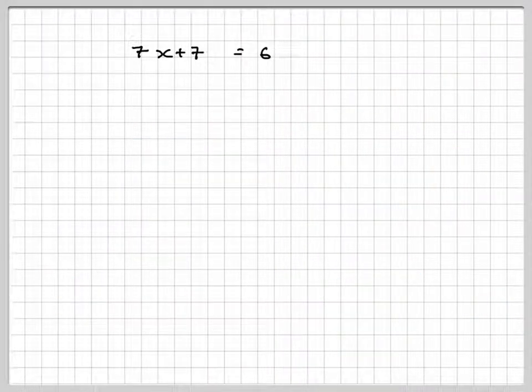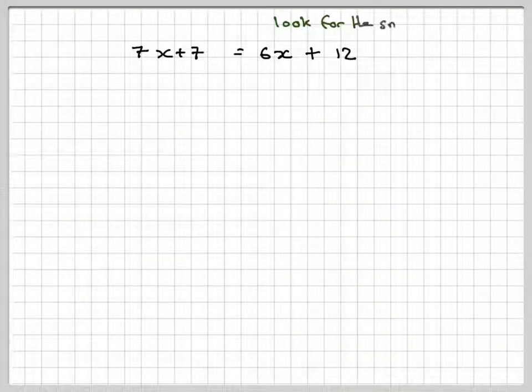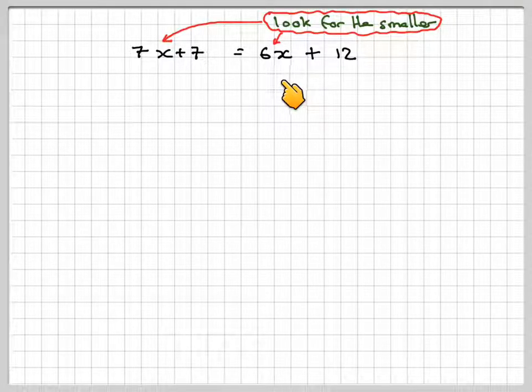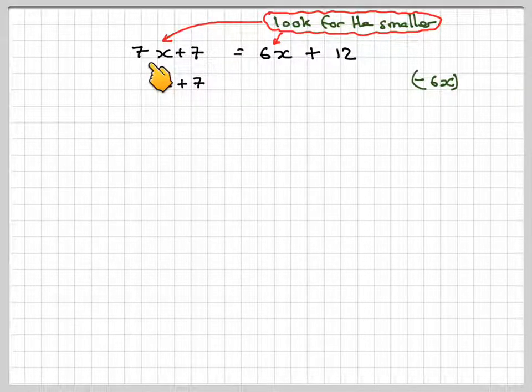Just carrying on. Now normally we look for the smaller of the two between 7x and 6x, and the smaller one is 6x. So we do the opposite thing and take 6x from both sides. If we take 6x from here we get x + 7. If we take 6x from here we get 12.